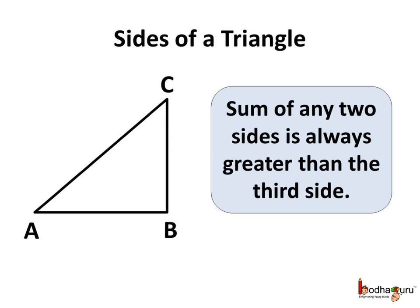The second property: the sum of any two sides of a triangle is always greater than the third side. Here in triangle ABC, the longest side is AC, but even AC is smaller than the sum of the other two sides, that is AB plus BC.